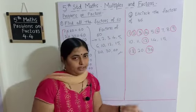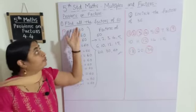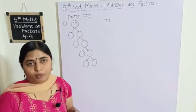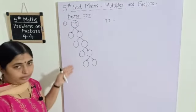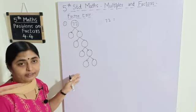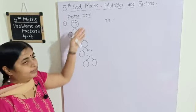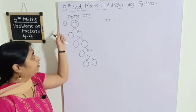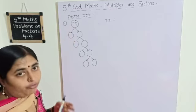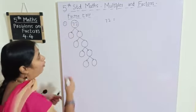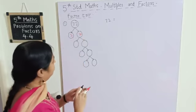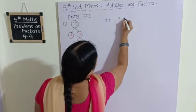Now we will study the factor tree. In a factor tree, they give a pattern and we go on filling the gaps by finding the factors — that method is called a factor tree. The first example is 72. We can write 72 as the product of two numbers: 2 into 36 equals 72.